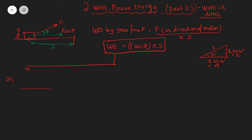Scenario A: you have 500 newtons of force and your displacement is 50 meters. Here the angle between your force and displacement is 0 degrees. So your work done is F cos 0 into S. That's 500 into 1 into 50, which equals 2500 joules.